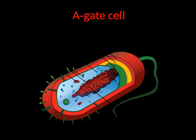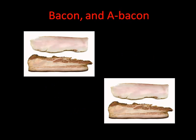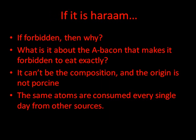Now let's get back to bacon. Oh look, our supply of bacon has doubled. One of these pairs was the original; the other has been copied atom for atom and produced by an assembly gate. They are absolutely identical. And now we come to the challenge part of the video: is the A-bacon still haram? It's not really pork after all — it did not come from a pig. It was simply built from constituent atoms that could have come from anywhere: another animal, vegetables, even dirt. It can't be the composition, and the origin is not porcine. The same atoms are consumed every single day from other sources.